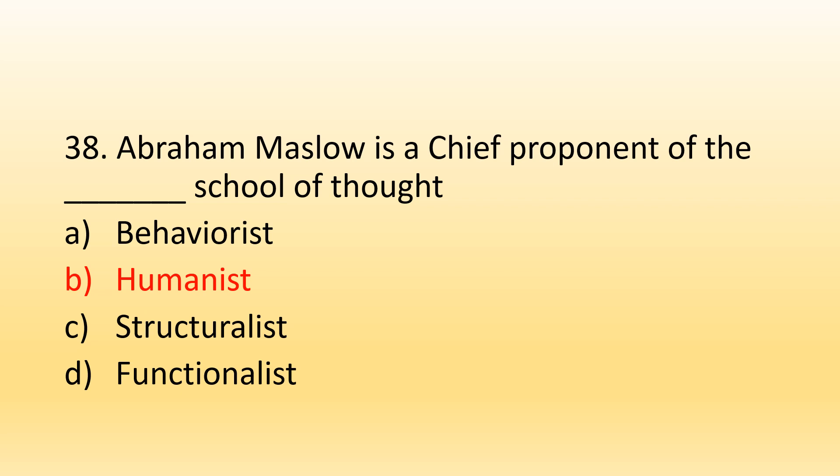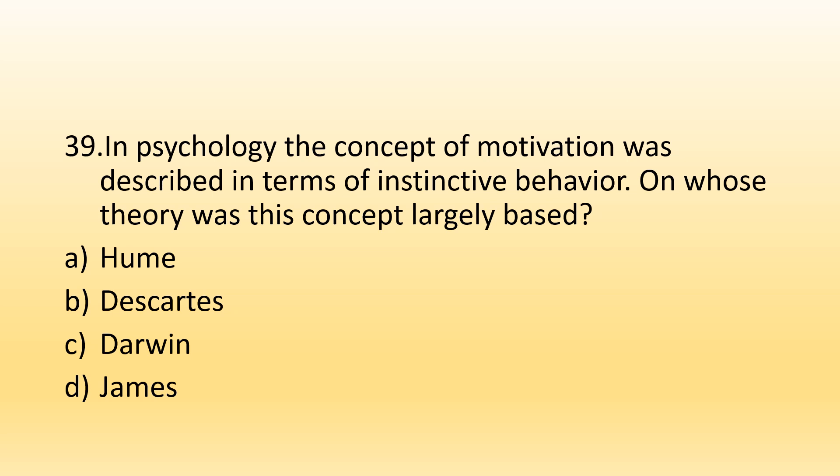Number 39. The concept of humans' unique tendencies described in terms of instinctive behavior — on whose theory was this concept largely based? Option A, Hume; Option B, Descartes; Option C, Darwin; Option D, James. The right option is Option C, Charles Darwin. Darwin explained instinctive behavior in humans to survive. For example, the newborn child has a rooting reflex, and animals — especially birds — migrate during winter to protect themselves. According to Darwin, instinctive behavior is what happens in humans to survive, and this is the basic motivation for survival.